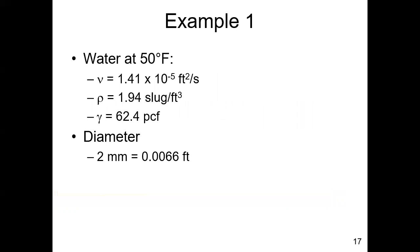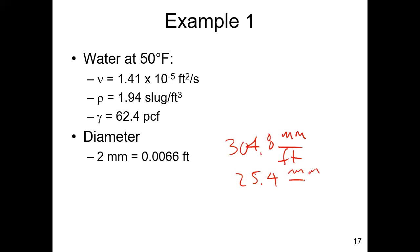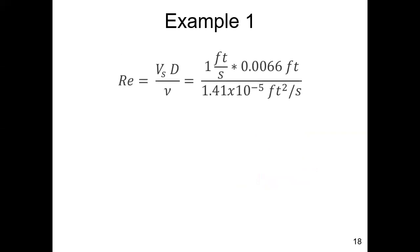At 50°F, we look up kinematic viscosity, density, and specific weight of water from the back of the textbook. The diameter is converted to feet using 304.8 mm/ft. Knowing velocity, diameter, and kinematic viscosity, we calculate the Reynolds number as 465. The first question to ask: is that greater or less than 0.1 — is it laminar or not? Since 465 is greater than 0.1, we do not have laminar settling.